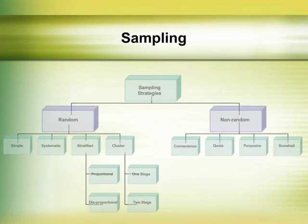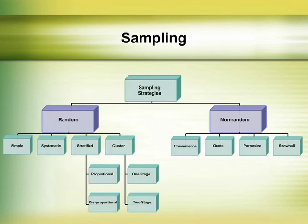Quantitative research almost always relies on a sample that is intended to be representative of a larger population. There are two basic sampling strategies — random and non-random — and a number of specific strategies within each of these approaches. This table provides examples of each of the major strategies.